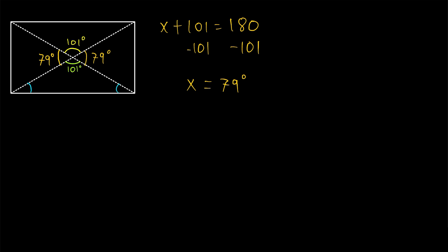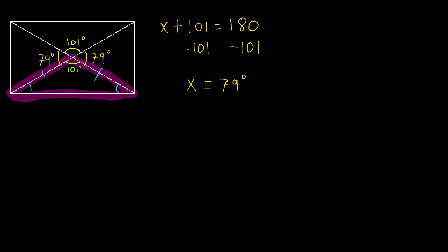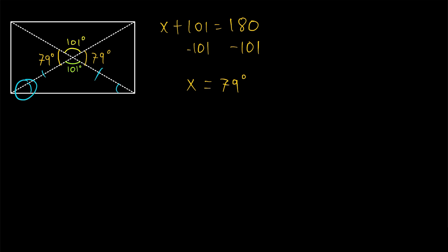Now let's look at the two angles at the base of this triangle. The diagonals of a rectangle bisect each other, so this piece here is congruent to this piece here. That means this is an isosceles triangle — a triangle with a pair of congruent sides. In an isosceles triangle, the angles opposite the congruent sides are also congruent. That's a result of the isosceles triangle theorem. Also, the three angles of a triangle have to add to 180 degrees.